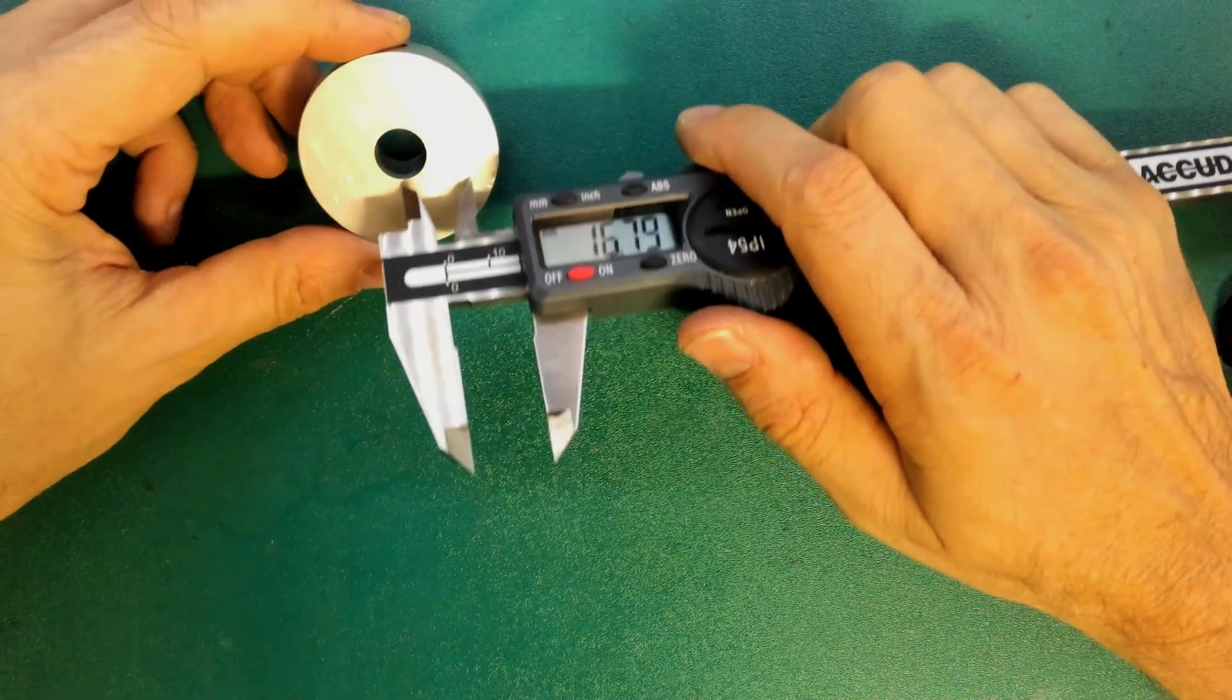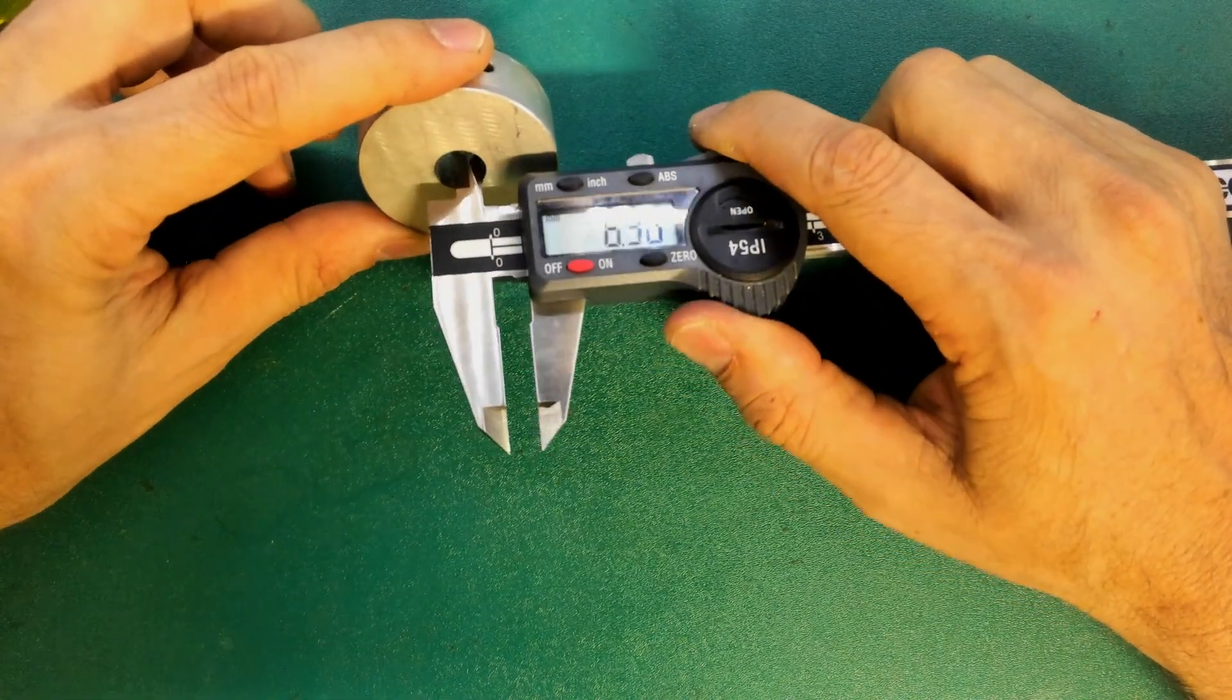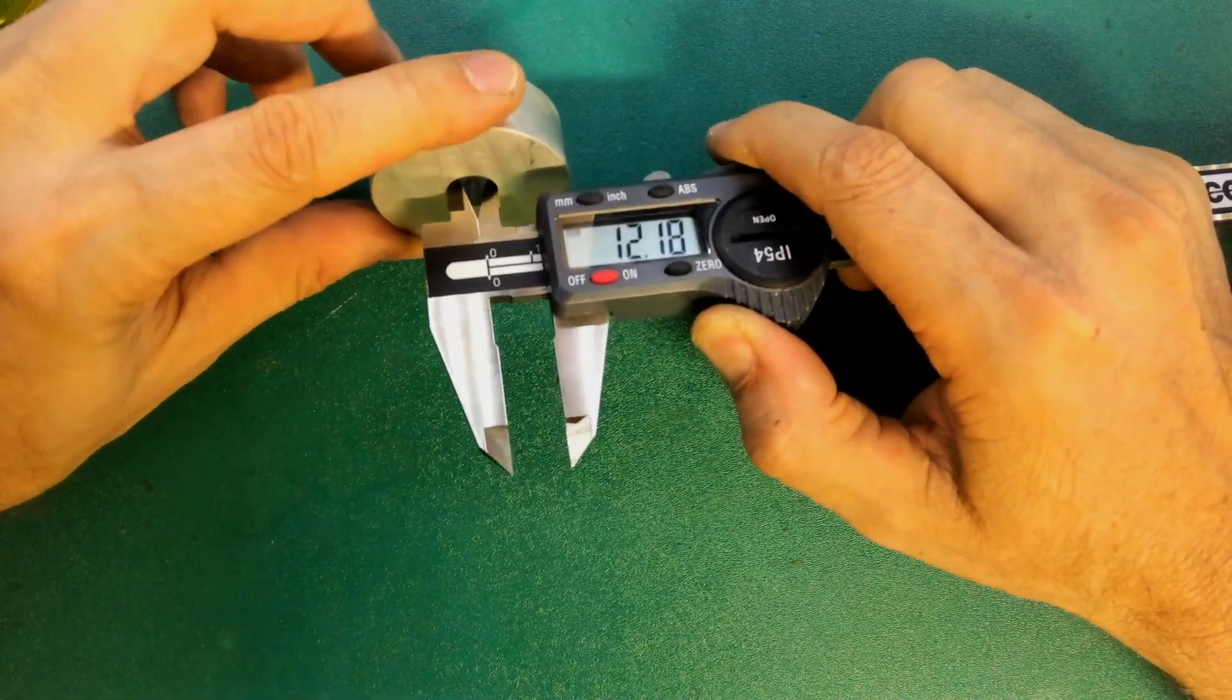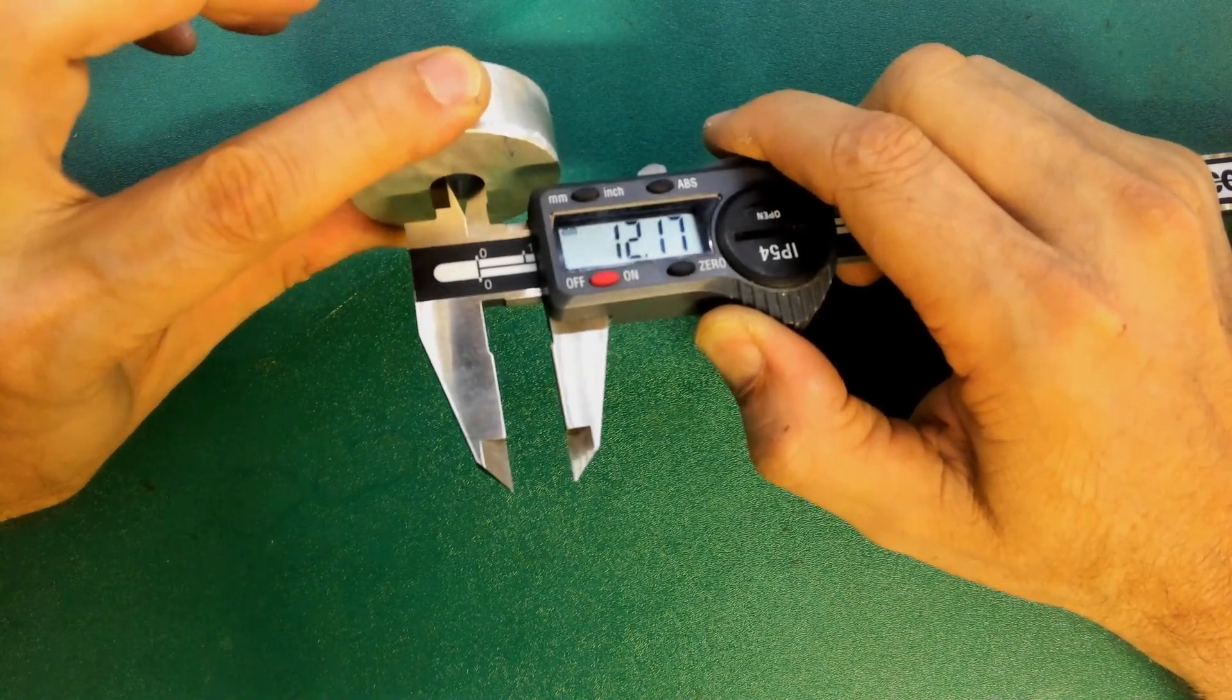So what if we want to measure the inside of something? That's what the upper jaws are for. You can measure the inside of a circle and you can see here that I'm moving it around a little bit to find the inside ridge.